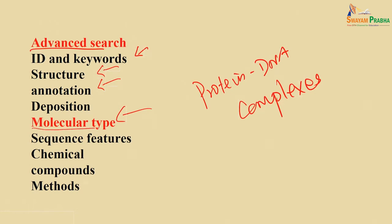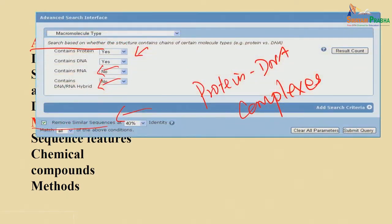The molecular type option is appropriate because there are several molecular types — many proteins, nucleic acids, and protein–nucleic acid complexes. To get protein–DNA complexes, you go to the molecular type option, and a new box will open. The questions ask: does it contain protein? Yes. Does it contain DNA? Yes. Does it contain RNA? No, because we are interested only in protein–DNA complexes.